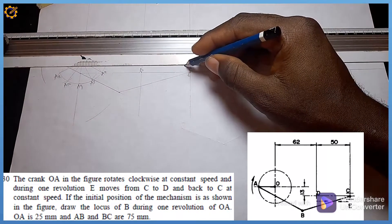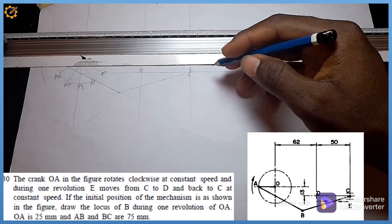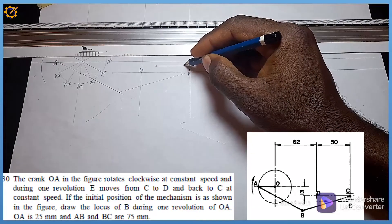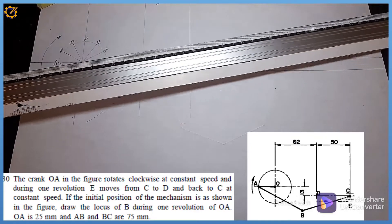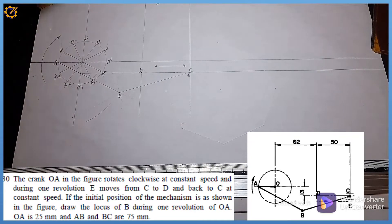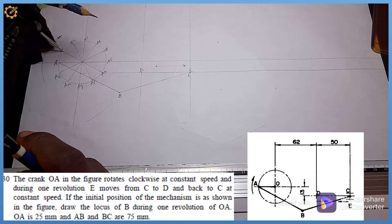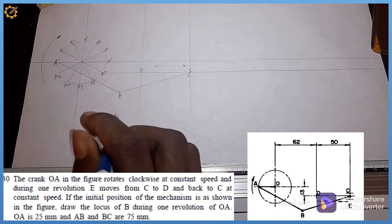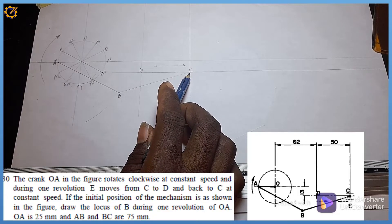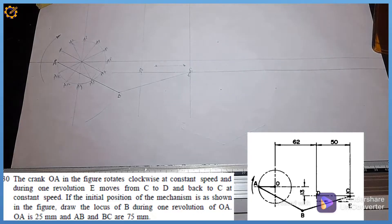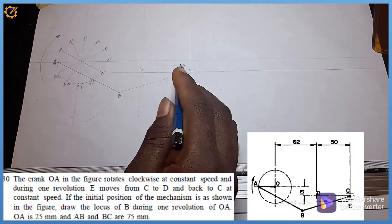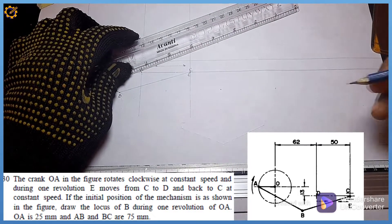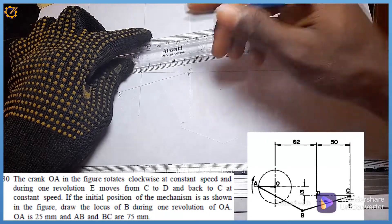These are the ends of rod E. We are told that rod E swings between C and D, and the junction where they meet is point B. Since point E moves at constant speed from C to D and back to C during one revolution, I'm going to divide the distance between D and C into six equal parts using the division of line technique.